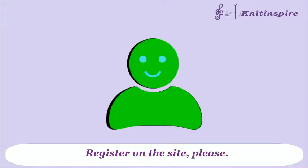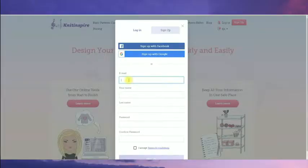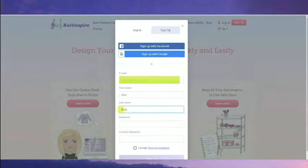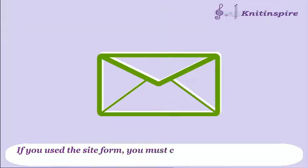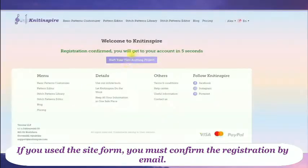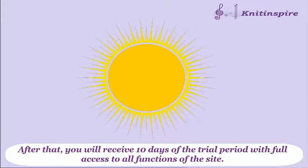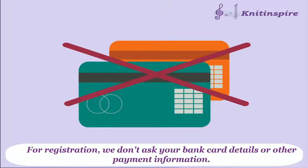Register on the site please. The registration process is standard. Use this for Facebook, Google, or other site forms. If you use the site form, you must confirm the registration by email. After that, you will receive ten days of trial period with full access to all functions on the site. We don't ask your bank card details or other payment information.